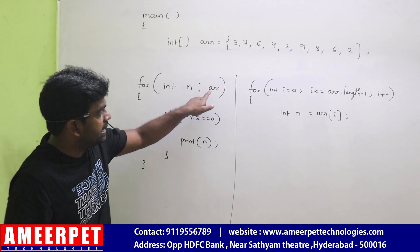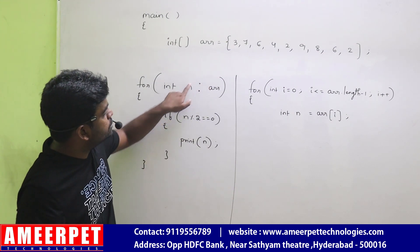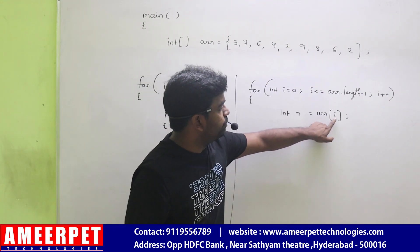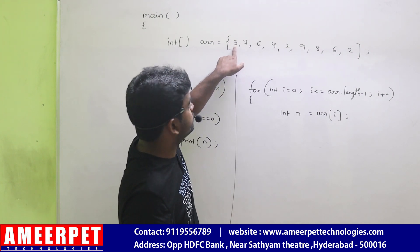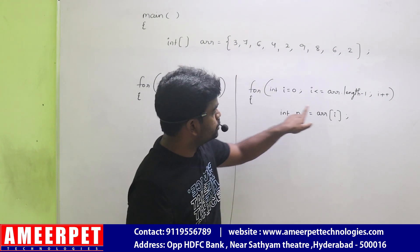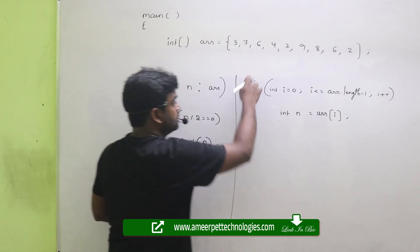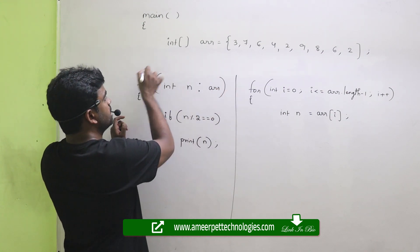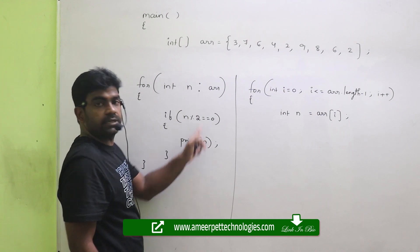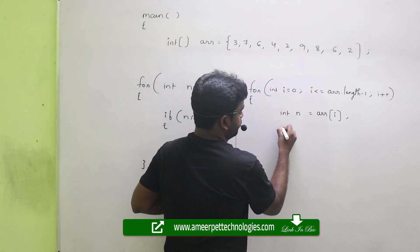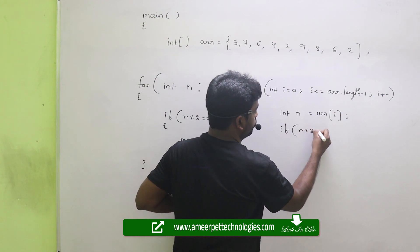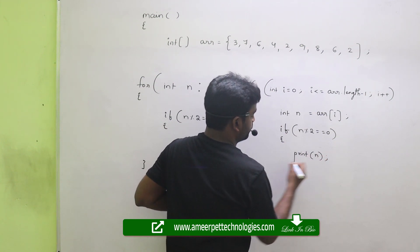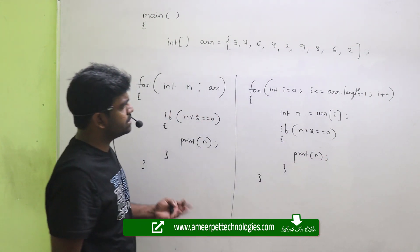From the array, each element directly will come and store into n. Here first i value is 0, ARR of 0 — zeroth location element is 3 — so ARR of 0 will store into n. Instead of writing this much code, you can write simply this much code — this is enough. Here also you can write: if n mod 2 equals 0, then printing that n value.